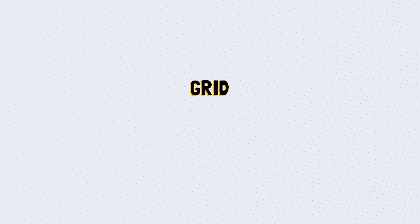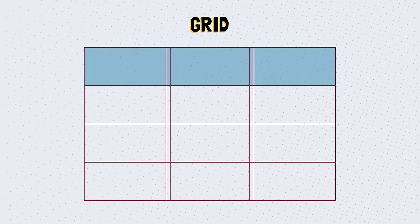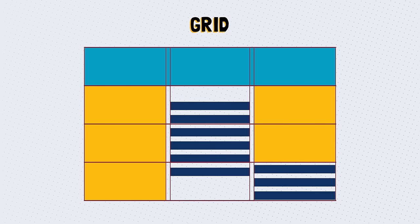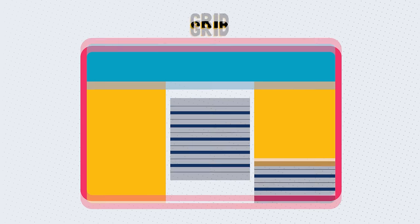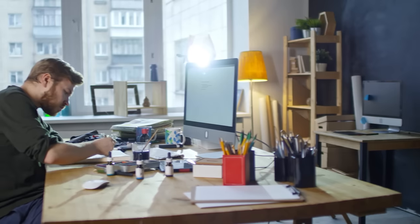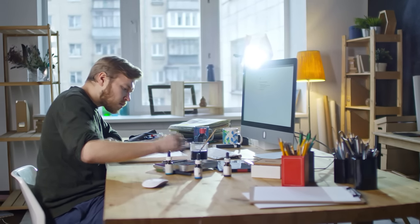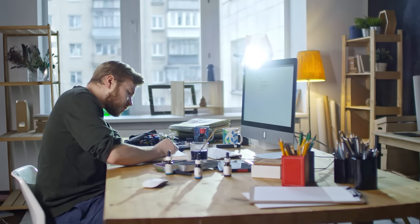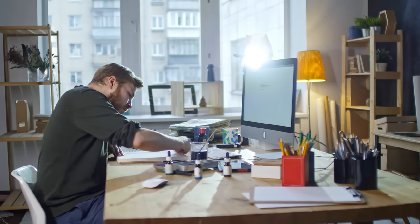Grid. Grids are a group of intersecting vertical and horizontal lines that can help you structure content on a page. There are many types of grids for different uses, but the common denominator is that they help keep the content organized and clean. Design principles are very important rules for graphic designers — they will help you understand the basics of creating a layout so you can eventually break the rules. In the next lesson, we will take a look at 10 important color definitions you should know.